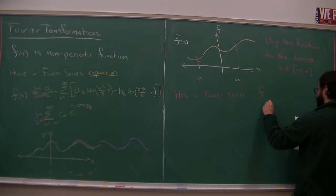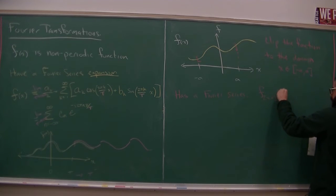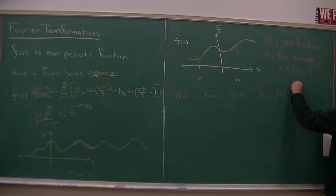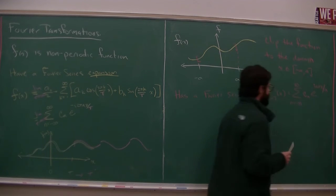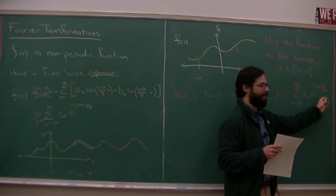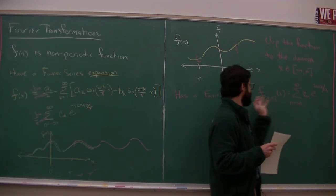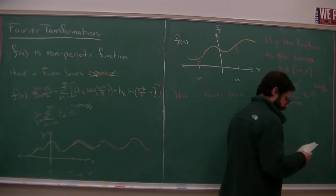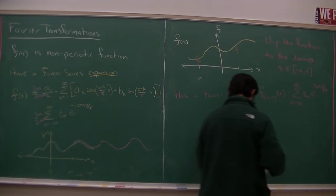So f of x, we'll call this minus a to a, just for notation reminding us we're truncating ourselves. n goes from minus infinity to infinity of cn. I'll use the exponential form, e to the i n pi x over a. Notice my 2a. So the period of this is 2a because we're truncating from minus a to a and my 2 go away.